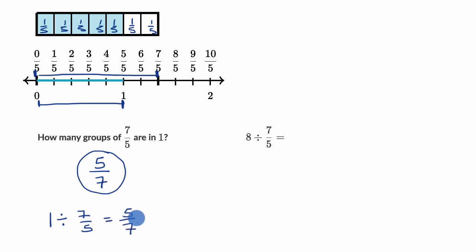So now, what is eight divided by seven-fifths going to be? Well, if one divided by seven-fifths is five-sevenths, or if you have five-sevenths of a seven-fifth in one, I know the language gets a little bit confusing, well, you're going to have eight times that many in eight. So this is going to be the same thing as eight times...